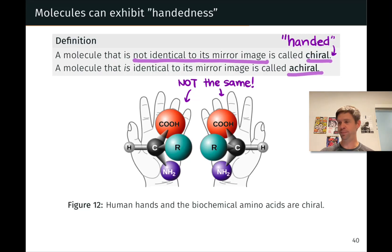This property of not being the same as your mirror image, what we might call it in everyday life is being handed. And we can think about objects from everyday life that are handed to get a sense of what we mean by this.